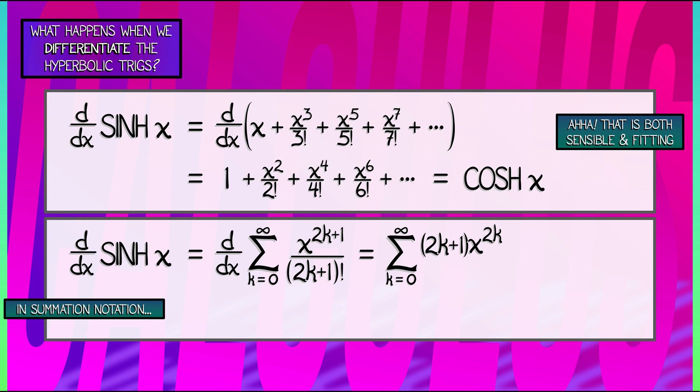Now I still need to divide that by quantity 2k plus 1 factorial. I get a little bit of cancellation, and I'm left with the sum k goes from 0 to infinity x to the 2k divided by quantity 2k factorial. That's it. That's the hyperbolic cosine series. We're all good.